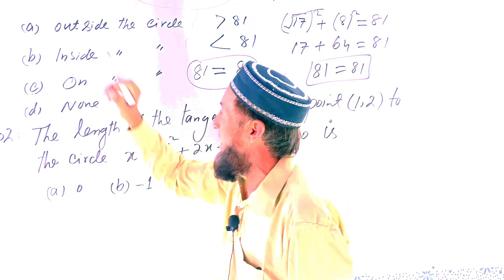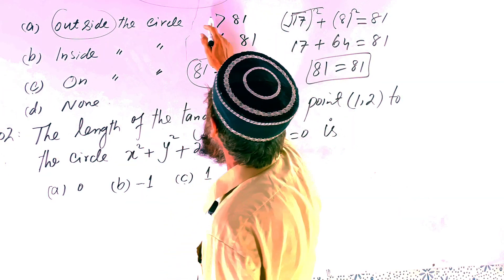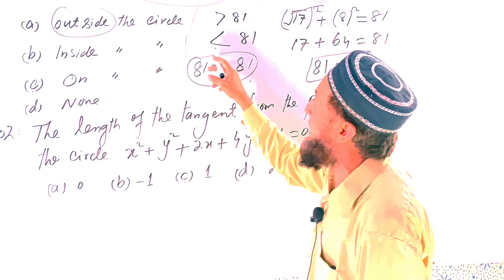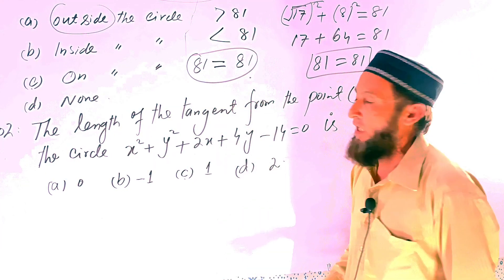So these are the conditions: if outside the point, the value must be greater than 81. If less than 81, that will be inside. If the result is less than 81, it will be inside.